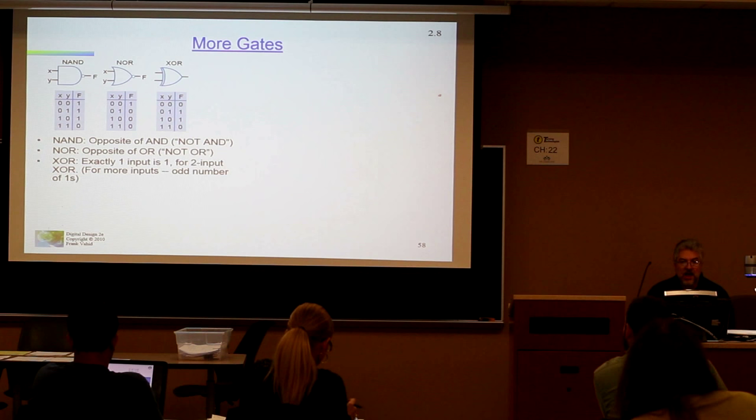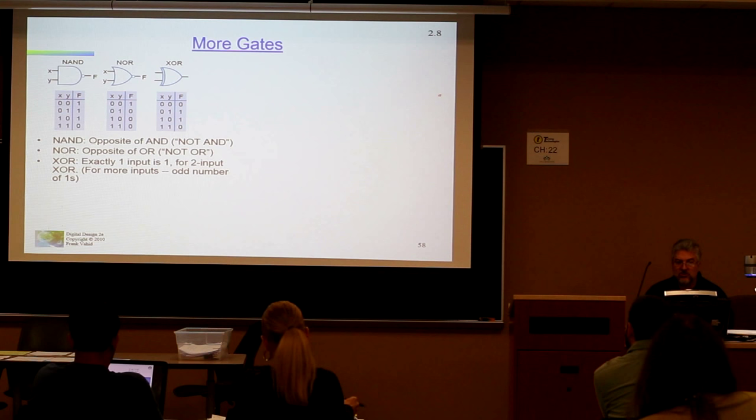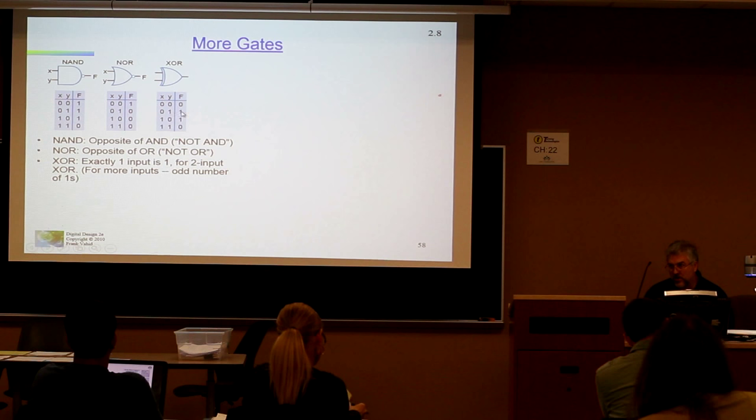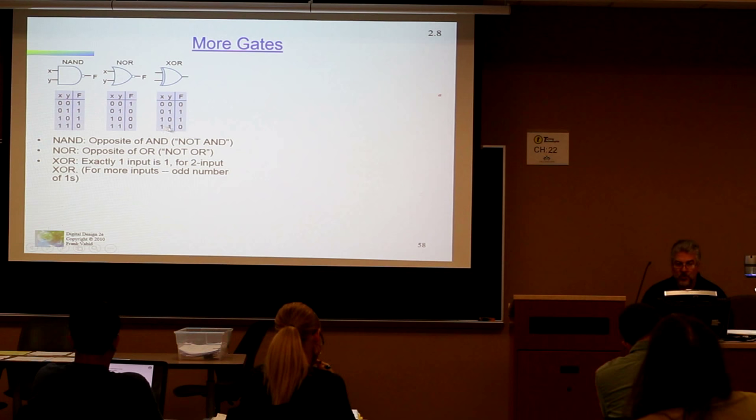There's also something called an exclusive OR. An exclusive OR is interesting. If one and exactly one of your inputs is one, then your output is one. So for zero, zero, your output is zero. And for one, one, your output is zero. This is pretty useful later on when we start talking about adders.